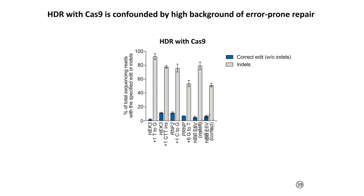Here's an example from a recent paper by researchers who are very good at HDR. They're targeting a variety of genes with single base changes or triple base insertions. In the blue bars you can see the percentage of cells that have got their intended HDR edits, and in grey are the percentage of alleles with random insertions and deletions due to non-homologous end joining. This shows the extent of the problem.